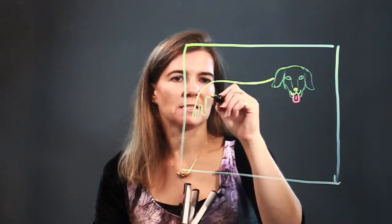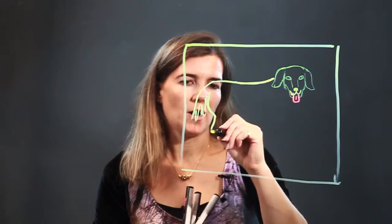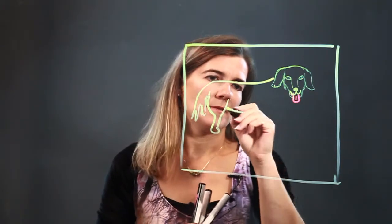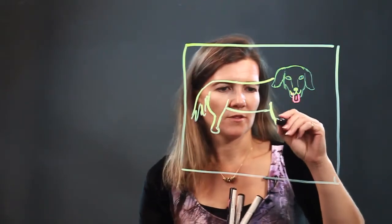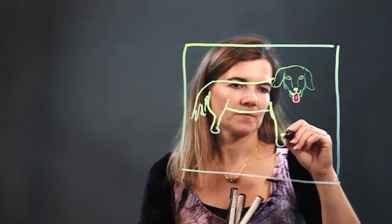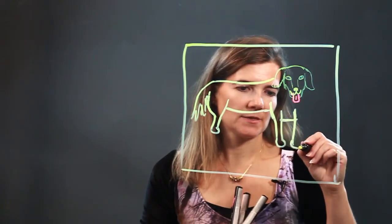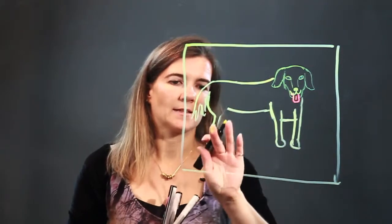Don't forget to put the fur detailing in. Alright, and then the paw and the body brings us around to the front paw. And notice how the front legs are longer. Let's make this back leg a little bit longer.